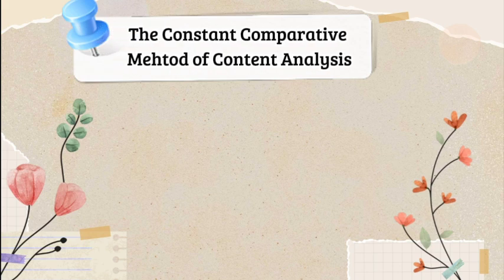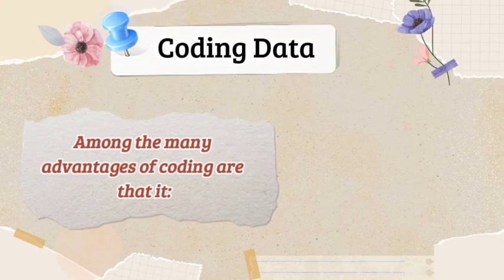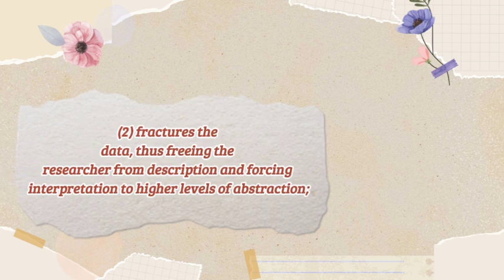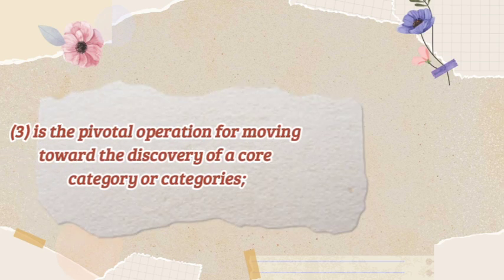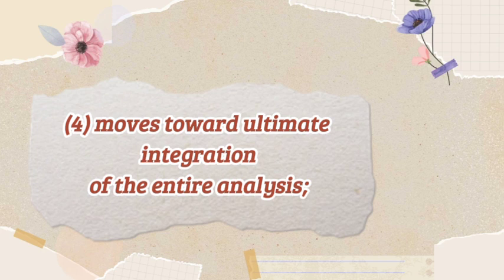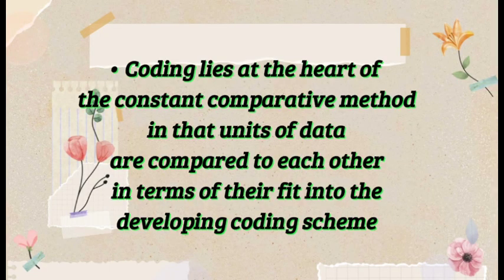The constant comparative method, codified by Glazer and Strauss, is generally recognized as one of the most effective means of qualitative content analysis. Among the many advantages of coding are that it: 1) follows upon and leads to generative questions; 2) fractures the data, freeing the researcher from description and forcing interpretation to higher levels of abstraction; 3) is the pivotal operation for moving toward discovery of a core category; 4) moves toward ultimate integration of the entire analysis; 5) yields conceptual density — relationships among codes and the development of each.